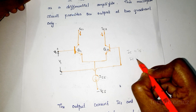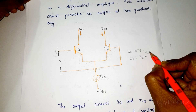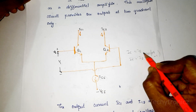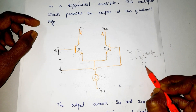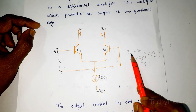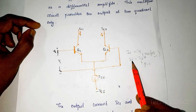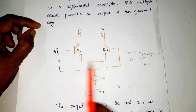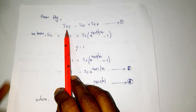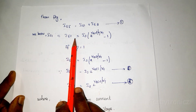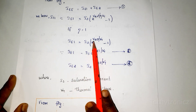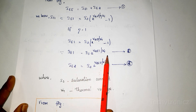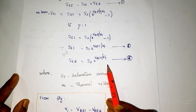The general expression of collector current is IC = IS × e^(VBE / ηVT) − 1, where IS is the saturation current, VT is the volt equivalent of temperature, and η = 1. Substituting with η = 1, we write expressions for IEE1 and IEE2 in terms of VBE1 and VBE2 respectively.